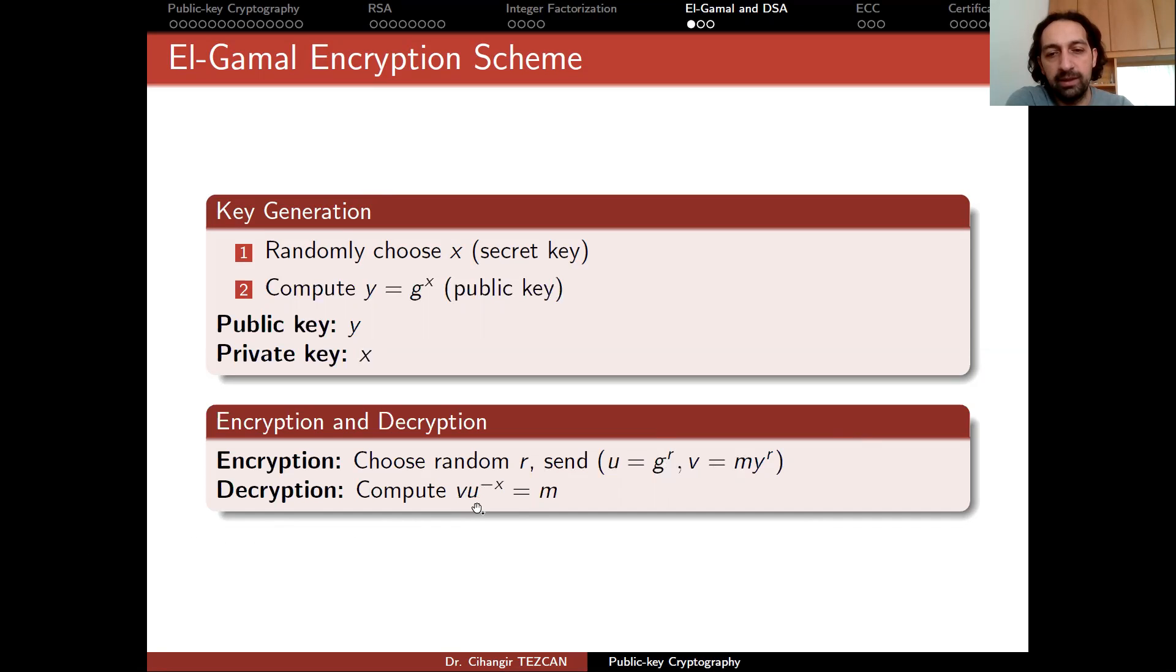And you might see why this is the case. U to the minus X is actually G to the power minus XR. And if you multiply it with V, you're just multiplying this value with G to the power minus XR. And since Y equals to this, they cancel each other. Because Y to the power R is actually G to the power X times R.